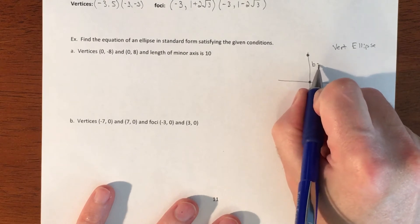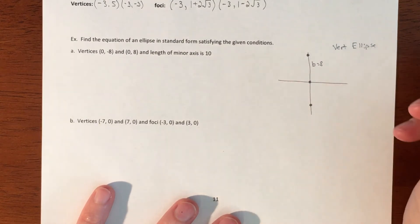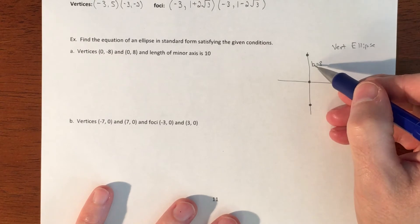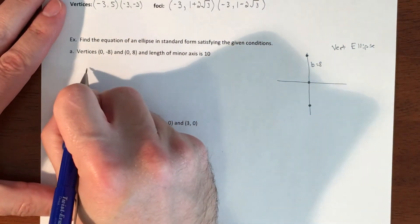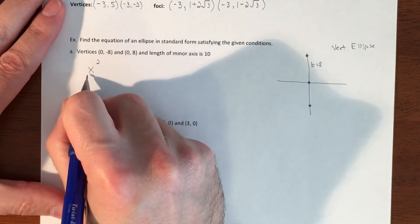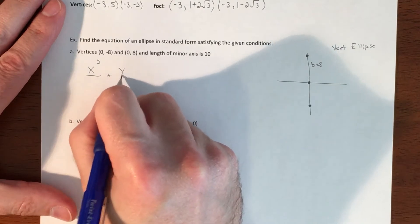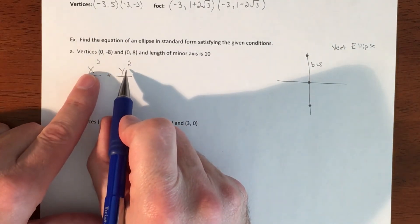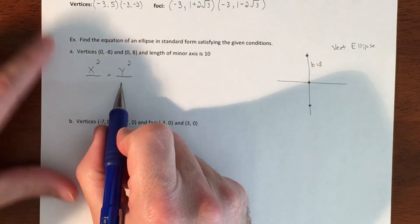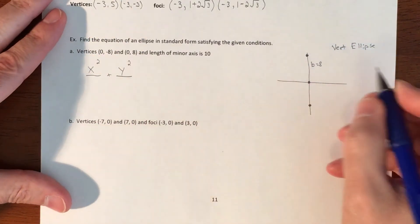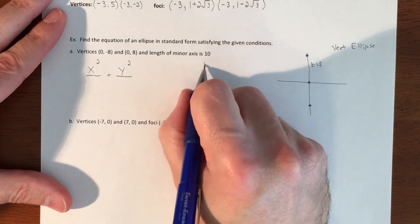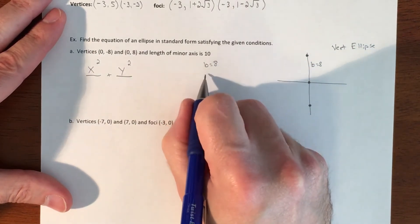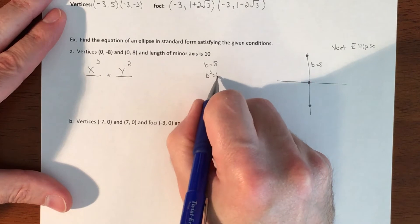Your b value is your up and down value. We have our center at (0, 0), so we don't have to add or subtract anything. The b value is 8, so b squared is 64.